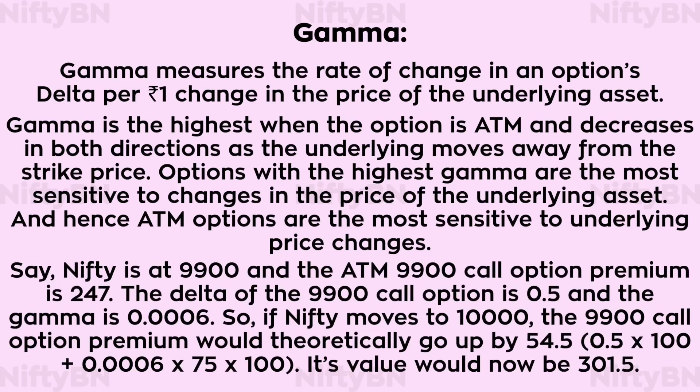Say Nifty is at 9900 and the at-the-money 9900 call option premium is 247. The delta of the 9900 call option is 0.5 and the gamma is 0.0006. So if Nifty moves to 10,000, the 9900 call option premium would theoretically go up by 54.5, and its value would now be 301.5.